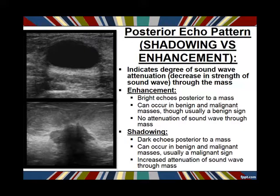We also look at posterior echo pattern — how much sound wave attenuation is occurring through a mass. If there's no attenuation, we get brighter enhancement behind the mass. If sound waves are stopped by the mass, we get a dark shadow behind it. Generally we worry about shadowing more than enhancement, though both can occur in benign and malignant masses. Echo pattern has to be combined with other features — you can't determine benign or malignant from enhancement or shadowing alone.